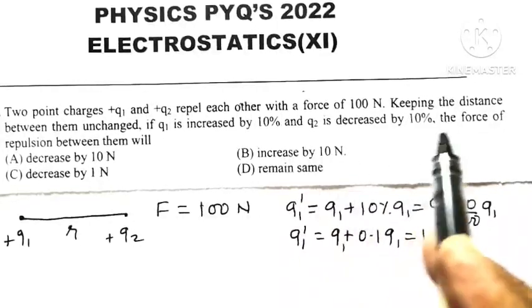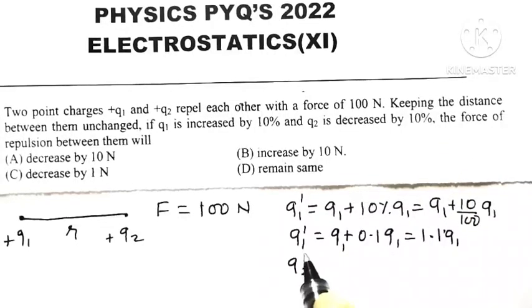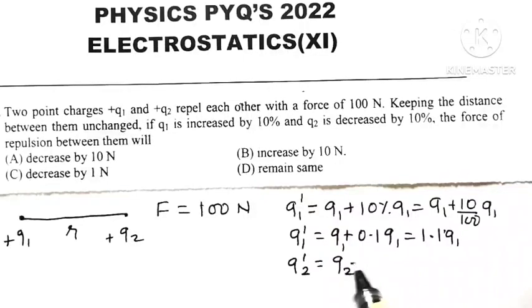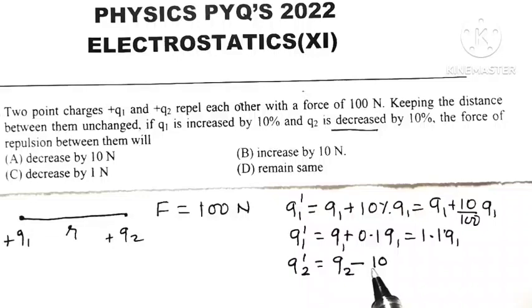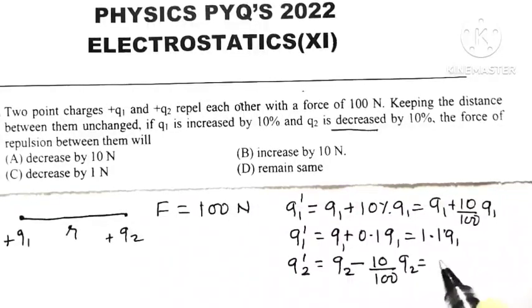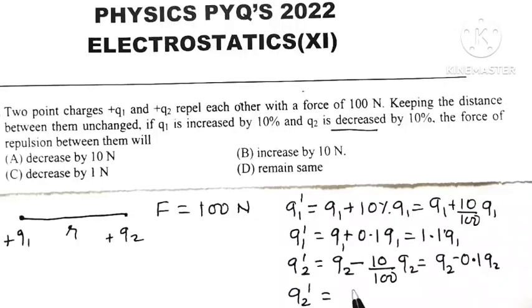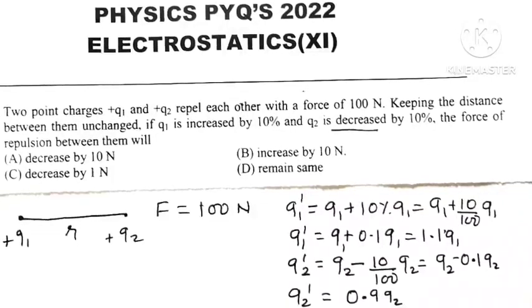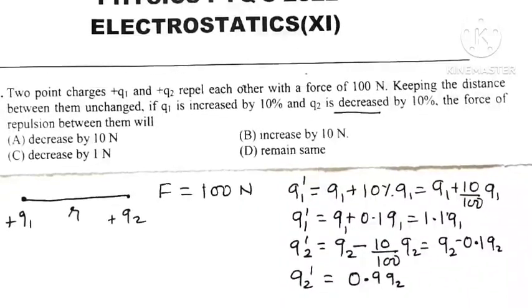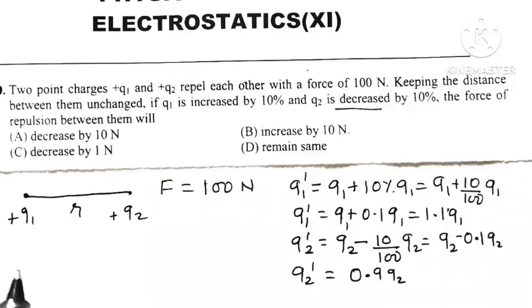And Q2 decreases by 10%, meaning the new Q2 dash equals original Q2 minus 10% of Q2, which is Q2 minus 0.1 Q2, so Q2 dash equals 0.9 Q2.